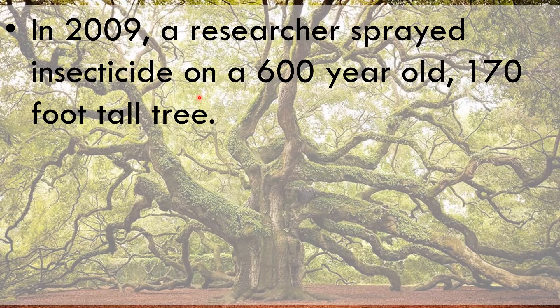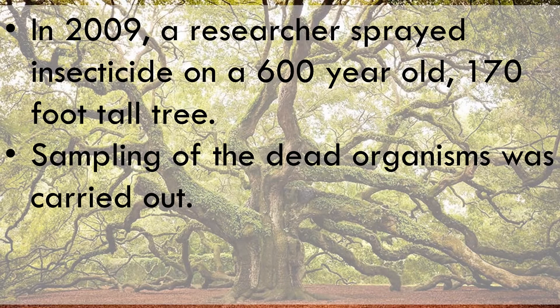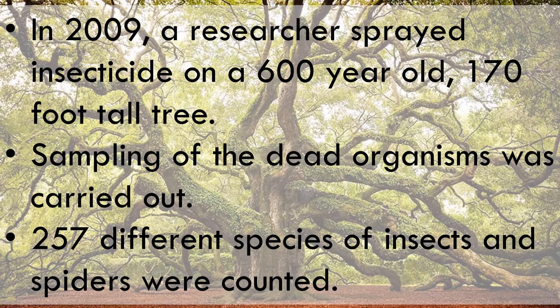In 2009, a researcher sprayed insecticides — a chemical that kills insects — on a 600-year-old, 170-foot-tall tree. Sampling of the dead organisms was then carried out — they maybe had a tarpaulin underneath the tree and looked at the dead organisms. There were 257 different species of insects and spiders counted. This was to provide evidence to pressurise governments and people to realise just how important trees are in terms of biodiversity.